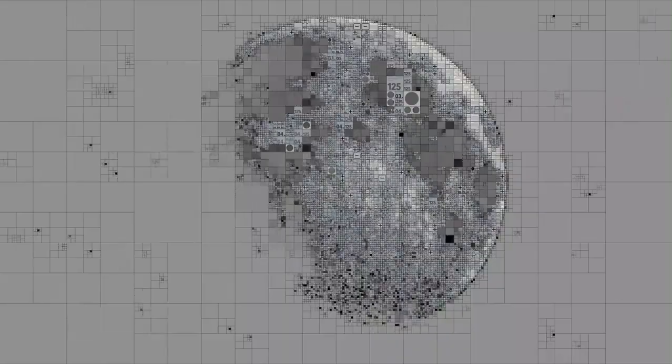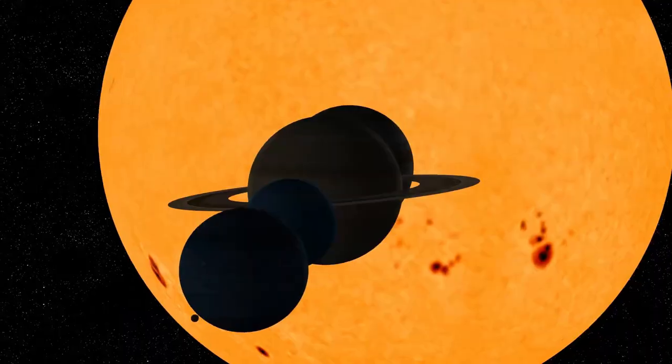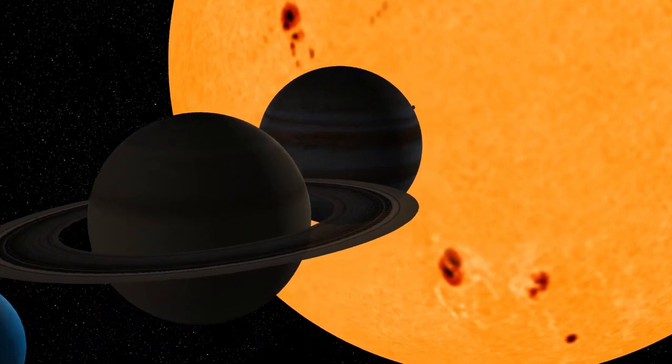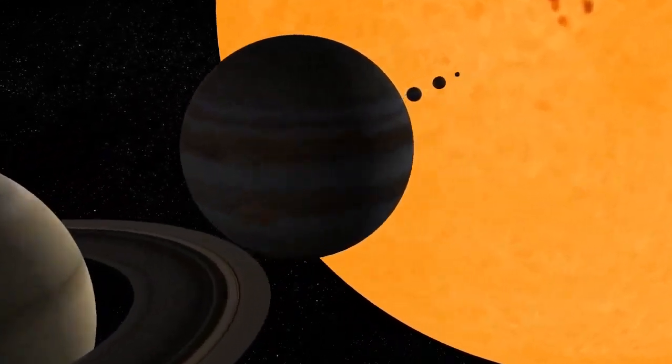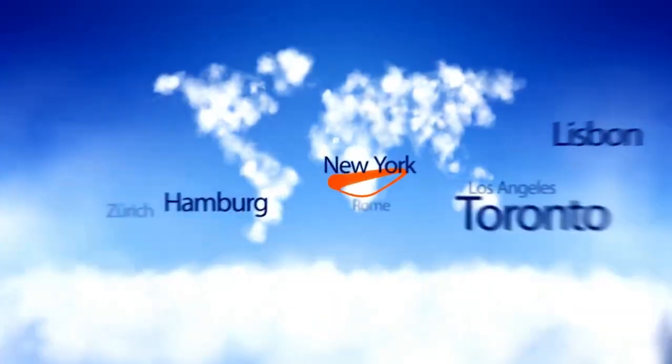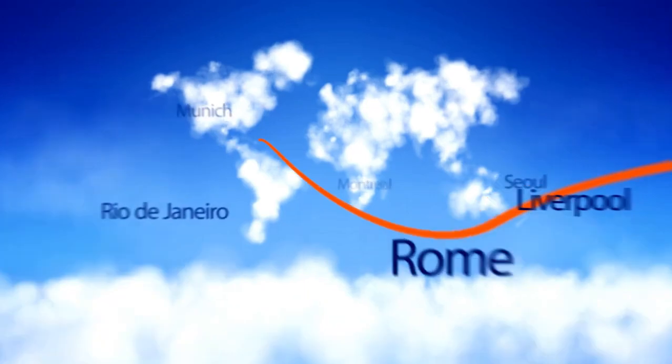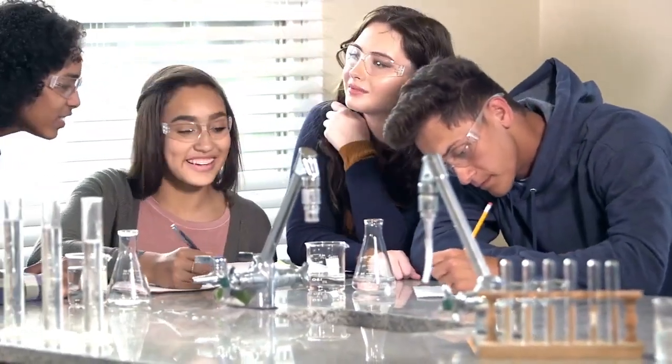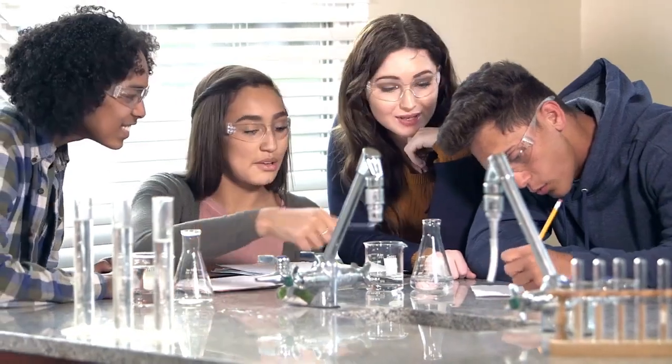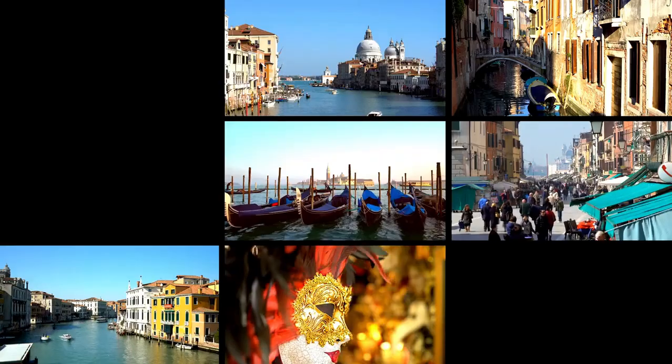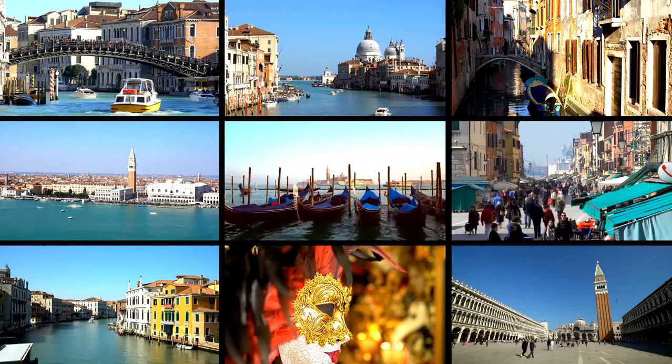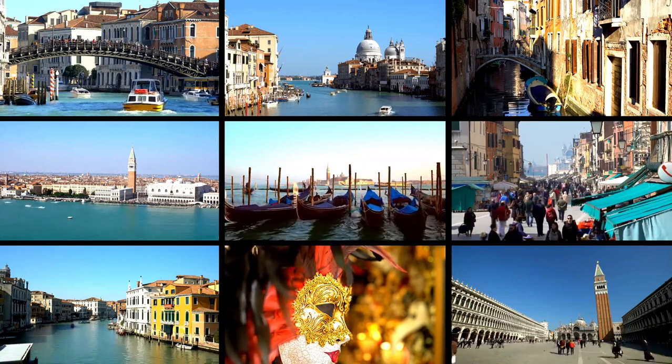Voyager 2's final transmissions included some of the most hauntingly beautiful images ever taken, snapshots of the edge of the solar system and the faint glow of distant stars. These images are a farewell gift from a spacecraft that has traveled farther than any human-made object in history. These final glimpses remind us of the vastness of space and the small yet significant role humanity plays within it. They serve as a poignant reminder of how far we've come and how much there is still to discover.